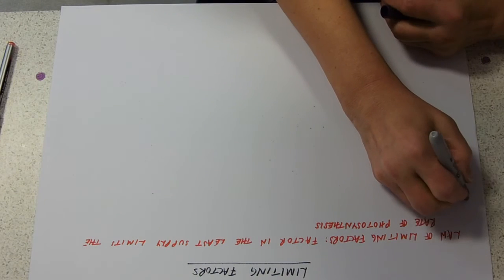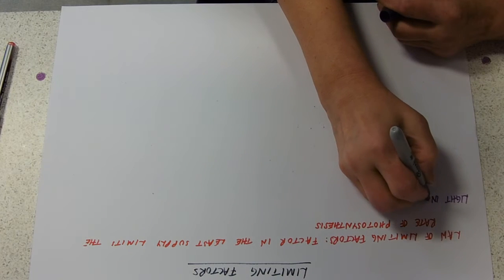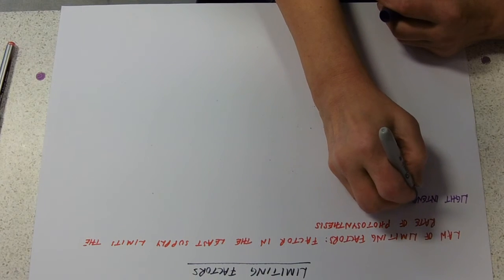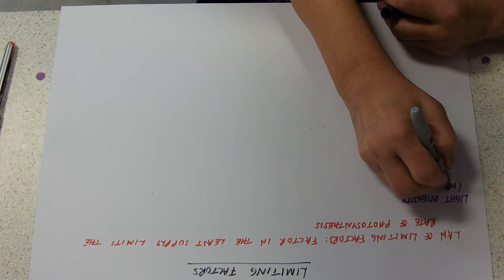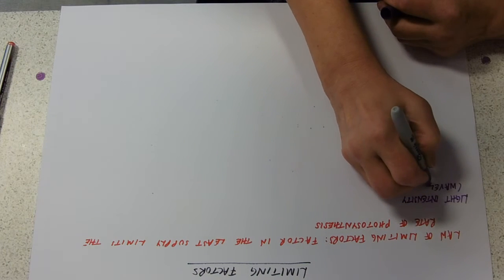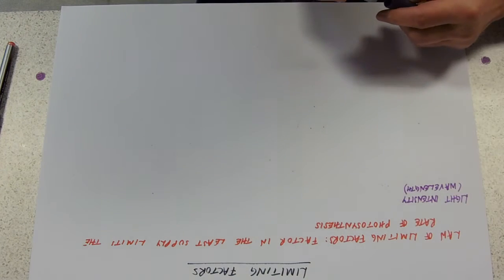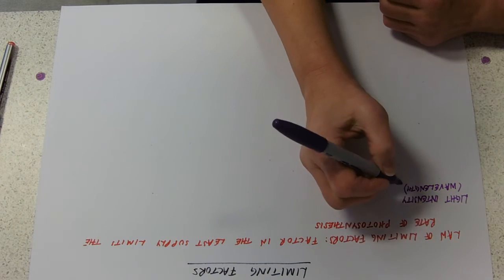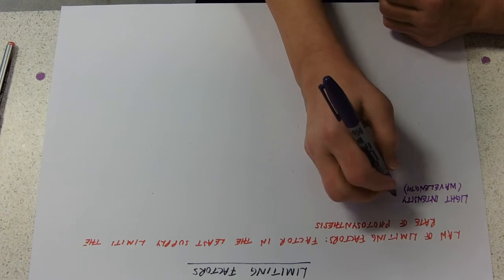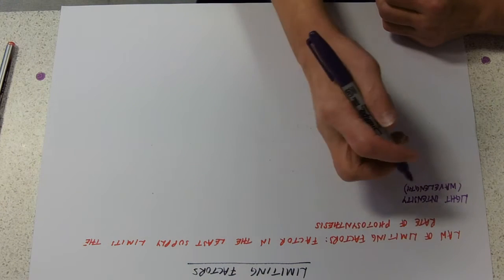Obviously, light. What's important about light is its intensity - I'm just going to bracket there wavelength, that's also important. Remember the absorption spectrum and action spectrum. Light intensity, how much light energy is available, is really important because it's the light energy that's going to excite the electrons.